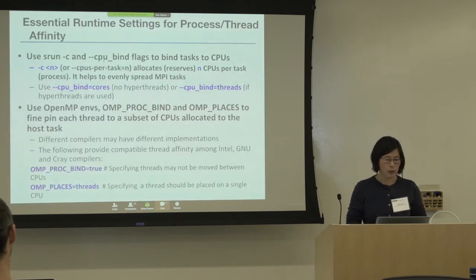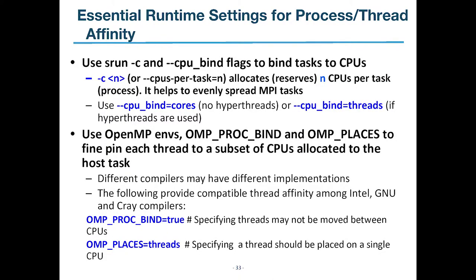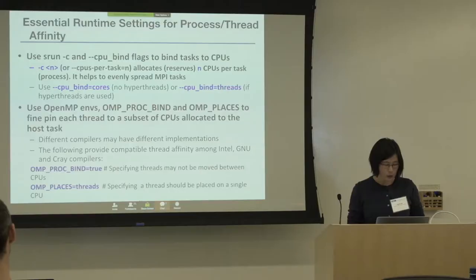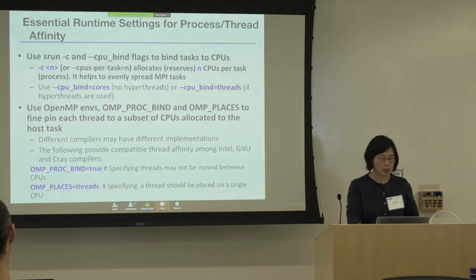The essential settings are: '-c' (CPUs per task), '--cpu-bind', and OpenMP environment variables. We recommend OMP_PROC_BIND=true rather than 'spread' — for GNU compilers, 'spread' causes only half the cores to be used. Set OMP_PLACES=threads as our recommended configuration.